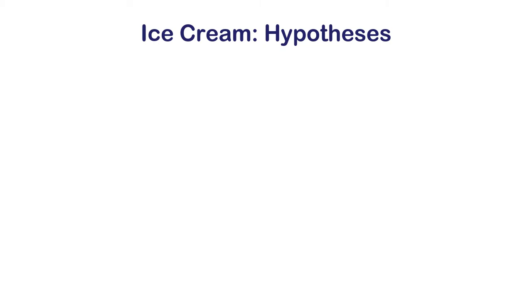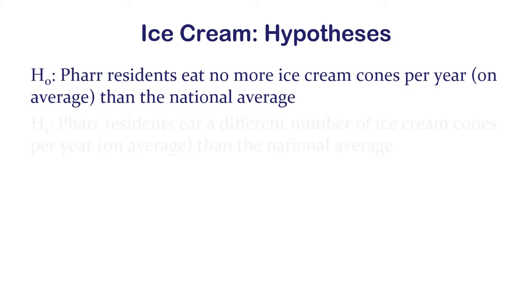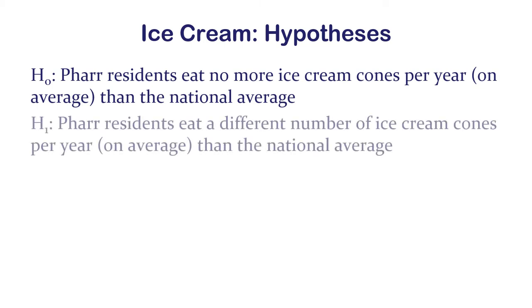Let's make it non-directional. The null hypothesis: far residents eat no more ice cream cones per year on average than the state average. The alternative: they eat a different number than the state average.